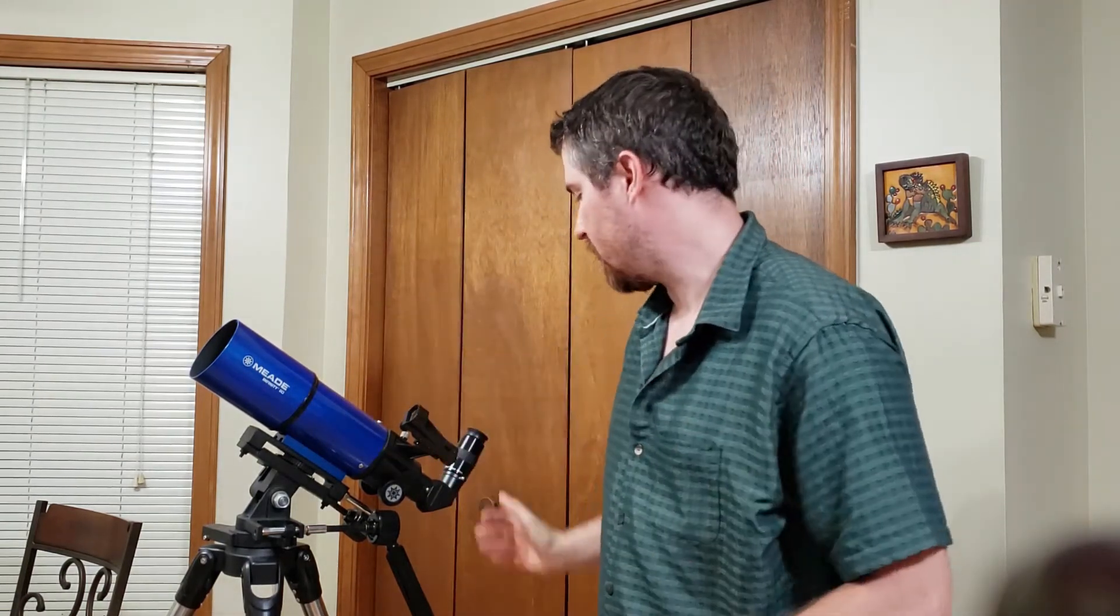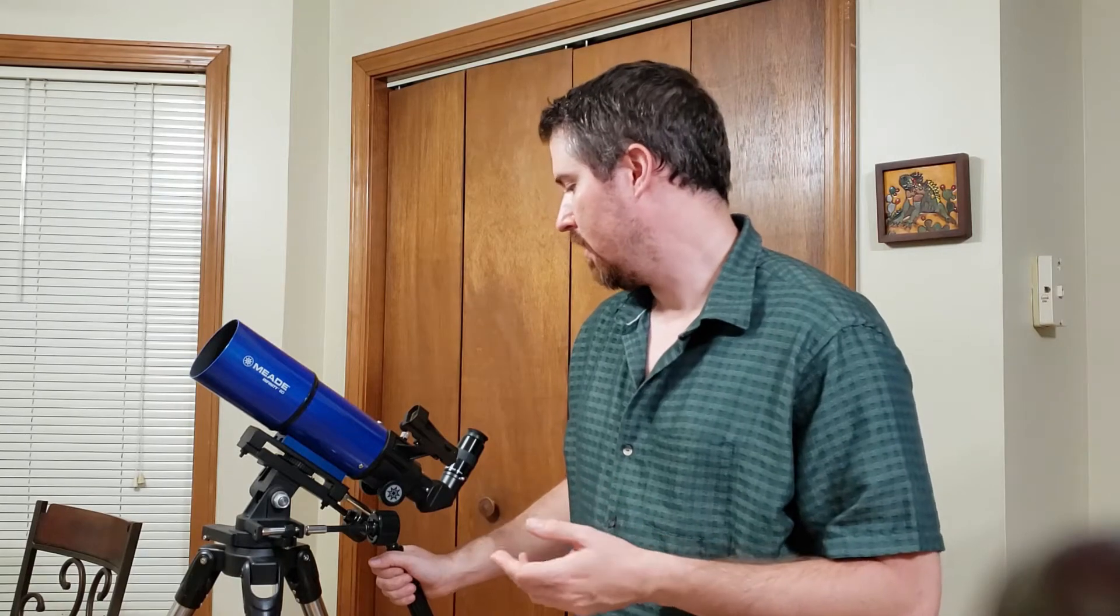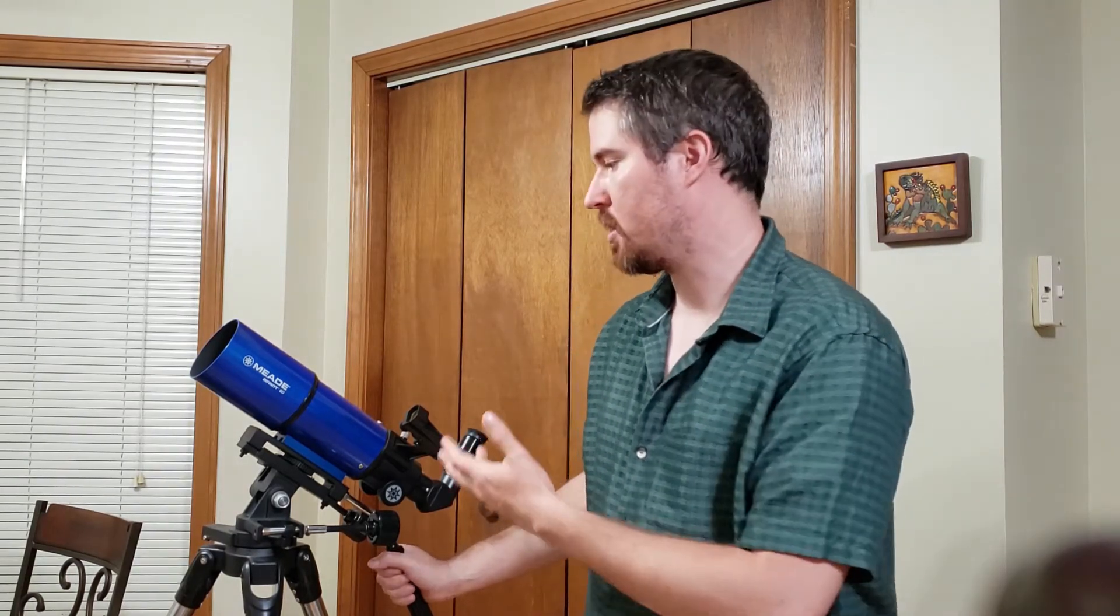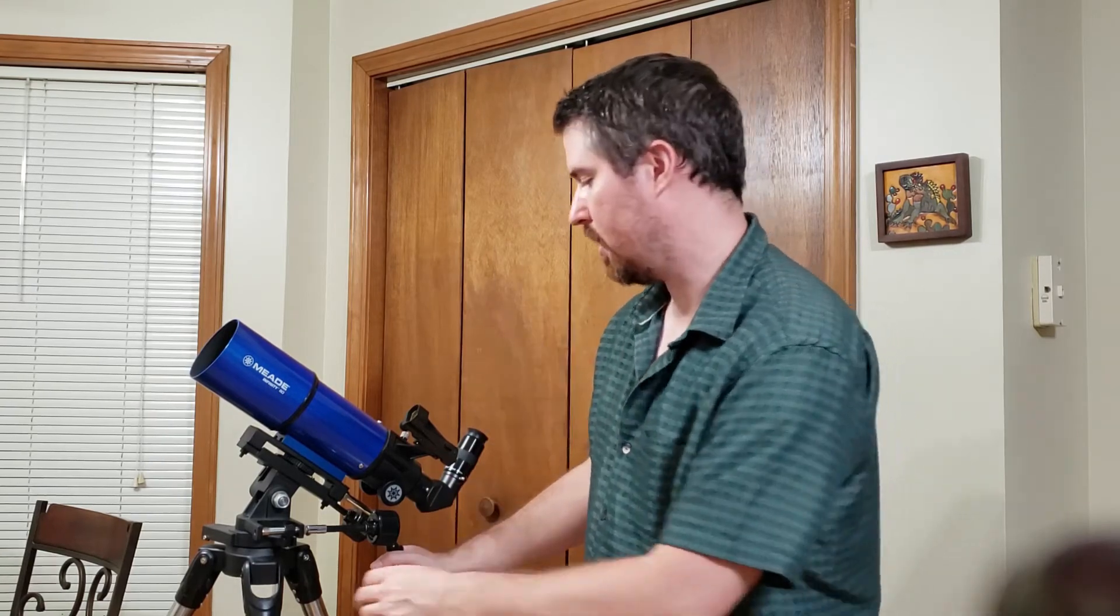It's got a 400mm focal length, so it takes in a wide field of view, especially with a low magnification eyepiece. When you're hunting down faint fuzzies, deep sky objects and the like, a wide field of view helps with finding them, especially when you're star hopping on a manually controlled mount.